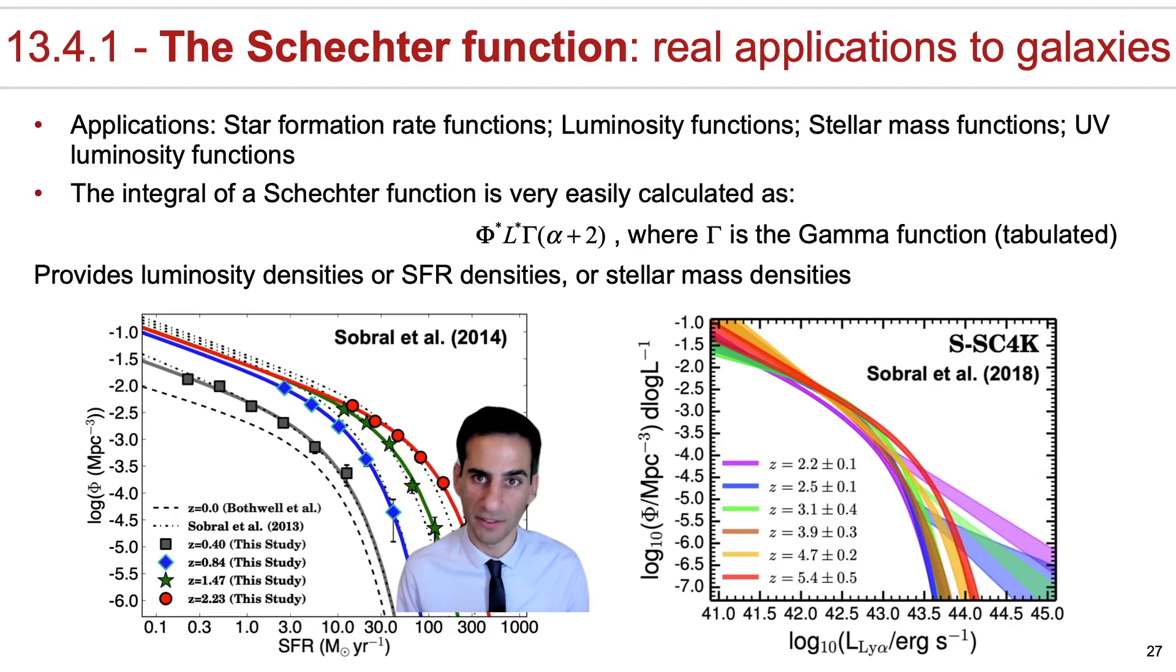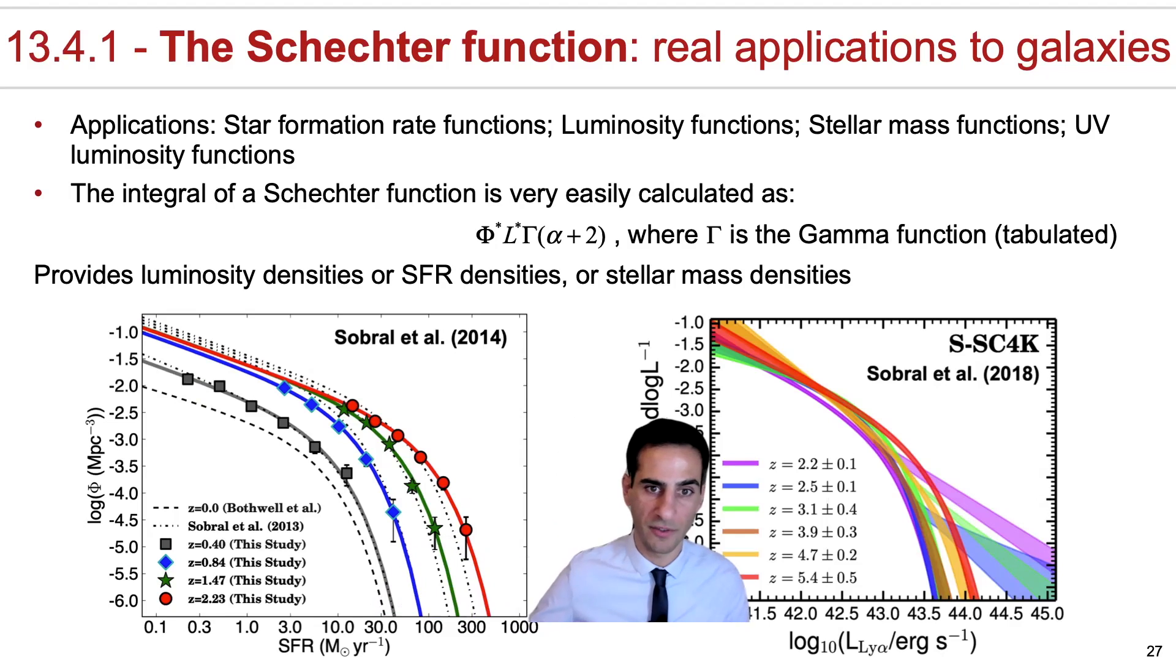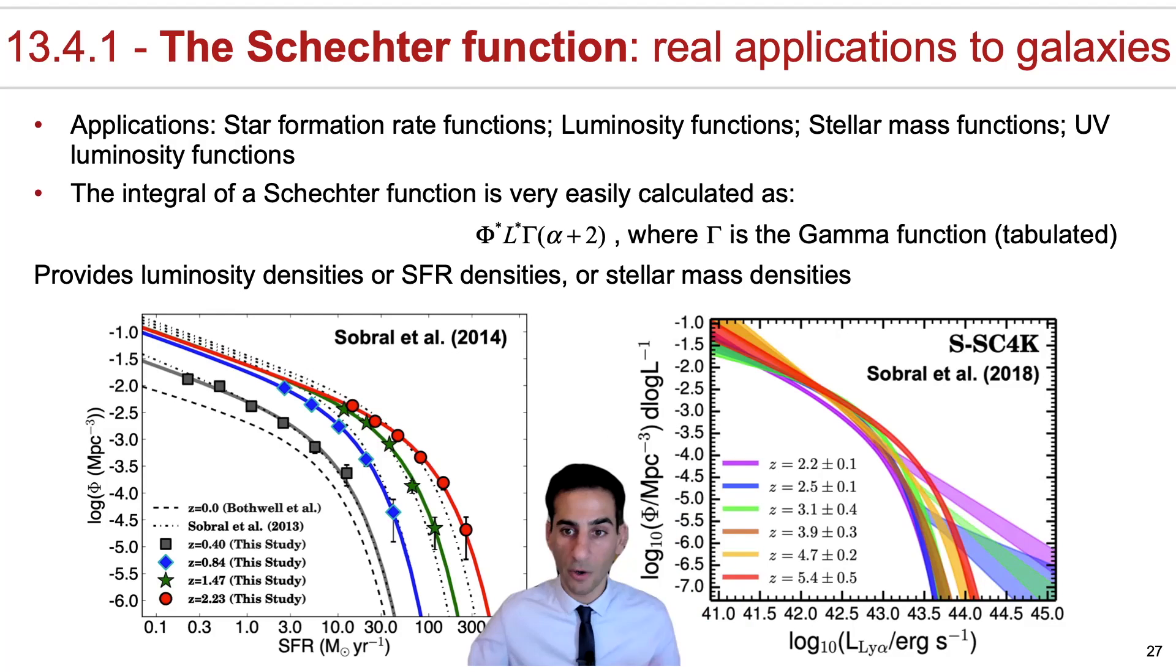The Schechter function is used a lot and there's lots of real applications to galaxies. It can be used to fit and model star formation rate functions, essentially the number density of galaxies as a function of their star formation rate. It is also used in general for luminosity functions, say the luminosity in B band or V band, for stellar mass functions when we look at the number density of galaxies given specific stellar masses, UV luminosity functions, or for example the luminosity function of Lyman alpha for galaxies that are bright in Lyman alpha.